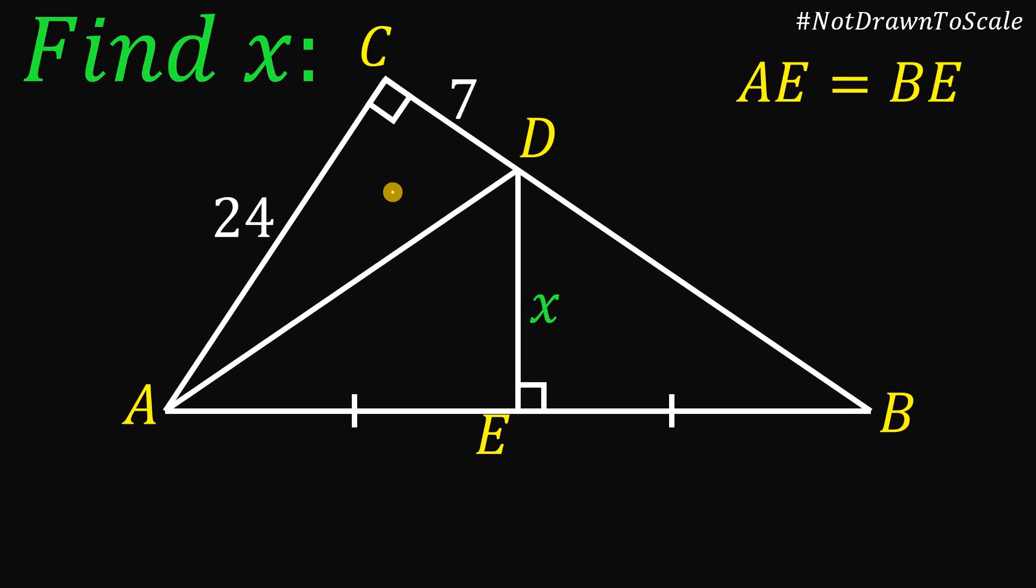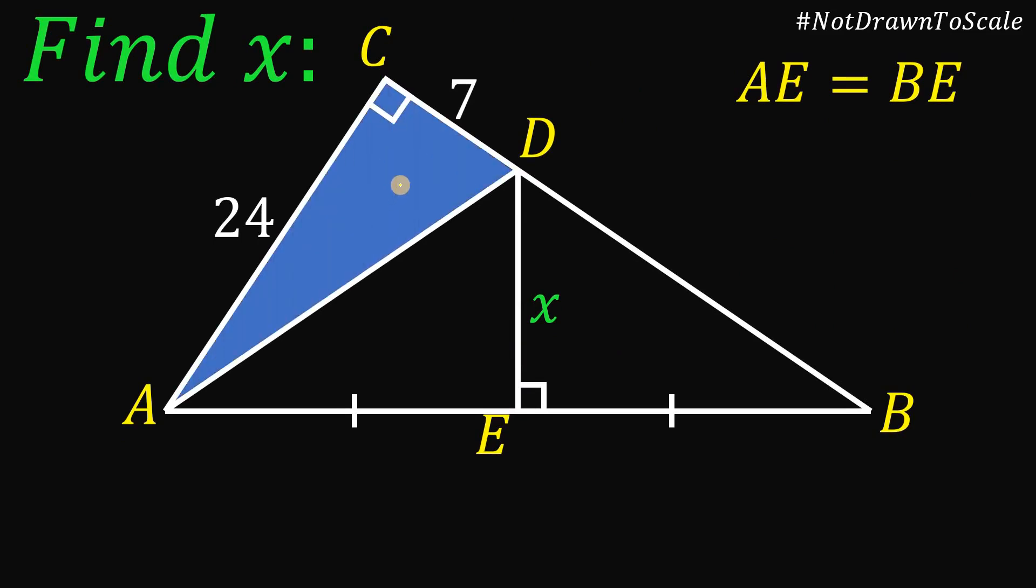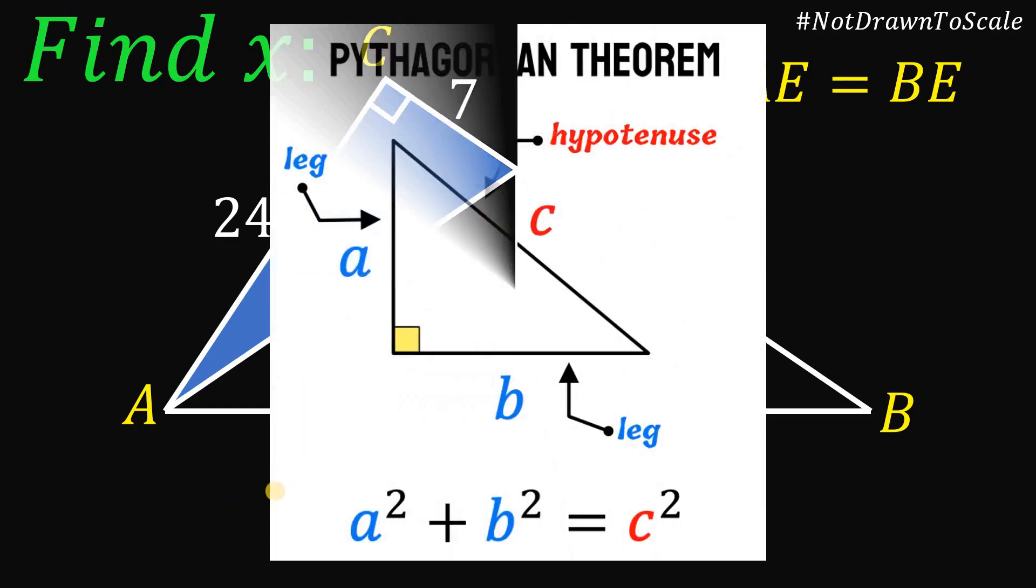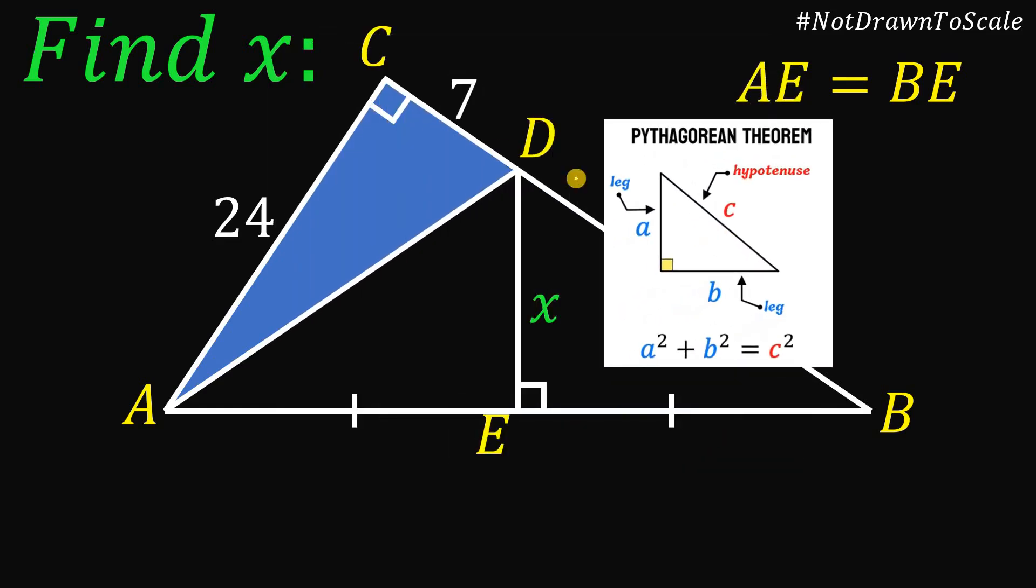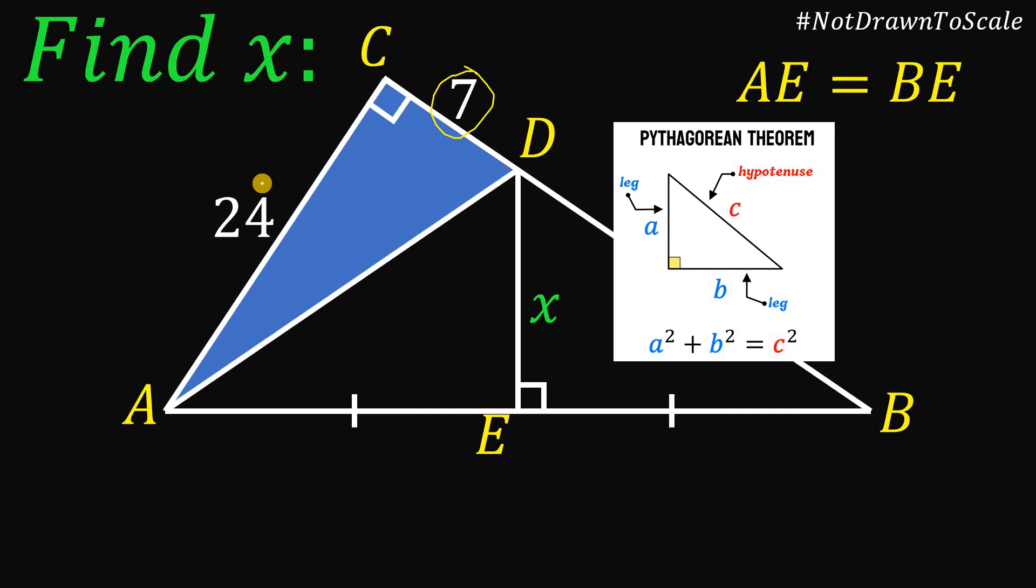All right, so to answer this question, we will focus on this right triangle. And since we have a right triangle, we can now use the Pythagorean theorem. So we have here A squared plus B squared equals C squared. Applying the Pythagorean theorem in this right triangle with a side length 7, 24, and AD, we have AD to the power of 2 equals 24 squared plus 7 squared. 24 squared, we can simplify this as 576, and 7 squared is just 49. If we add this, we get 625.